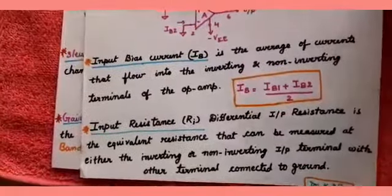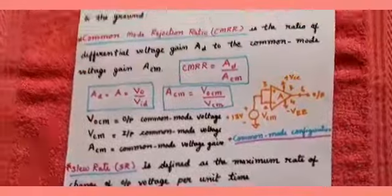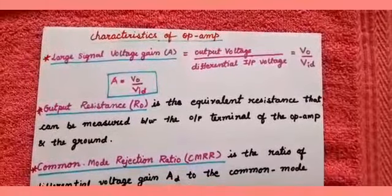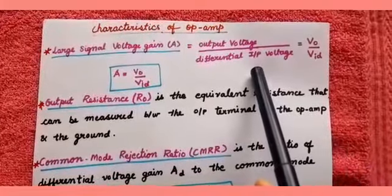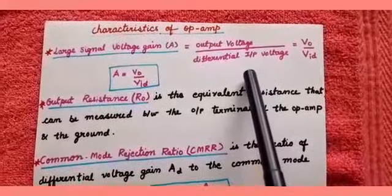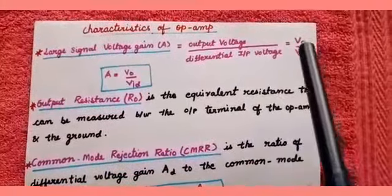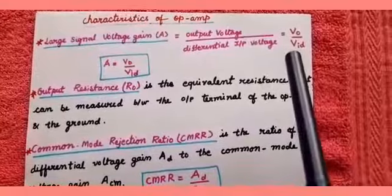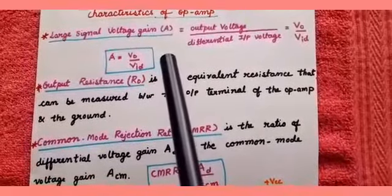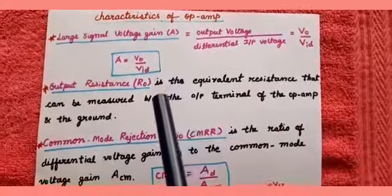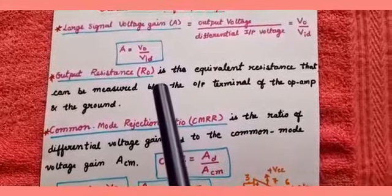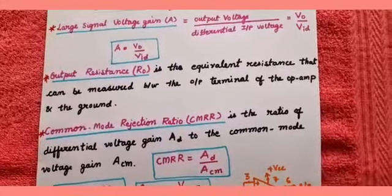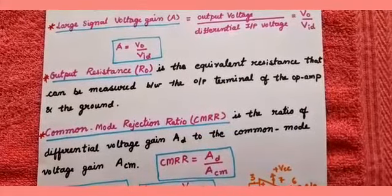In the next slide I will discuss a few more characteristics of op-amp. The next characteristic is large signal voltage gain, capital A. Gain is output by input, so A is equal to Vo divided by Vid, where Vo is the output voltage and Vid is the differential input voltage. The next characteristic is output resistance Ro, which is the equivalent resistance that can be measured between the output terminal of the op-amp and ground.